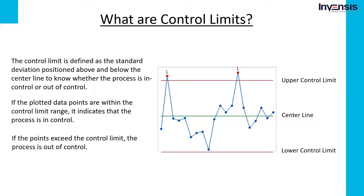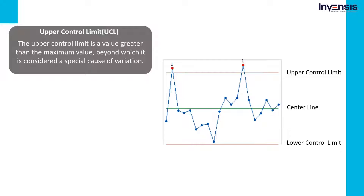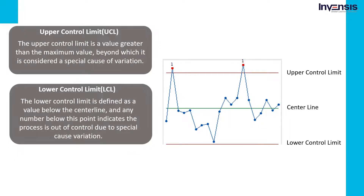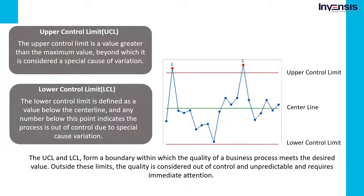The upper control limit is a value greater than the maximum value, beyond which it is considered a special cause of variation. The lower control limit is defined as a value below the centerline, and any number below this point indicates the process is out of control due to special cause variation. Together, the upper and lower control limits form a boundary within which the quality of a business process meets the desired value. Outside these limits, the quality is considered out of control and unpredictable, and requires immediate attention.